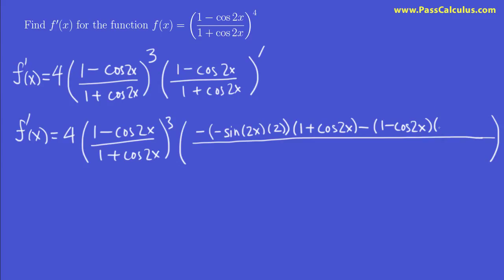And the derivative of cos 2x, we actually just did that. It's minus sine 2x. And then times 2. I'll just go like that. And the denominator here is easy. It's 1 plus cos 2x squared.